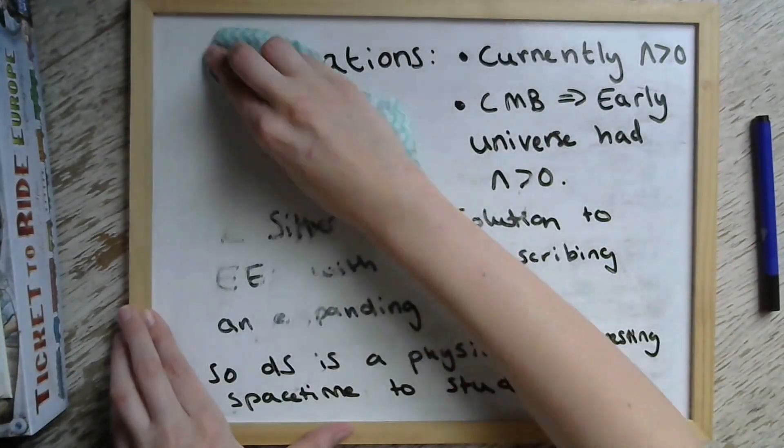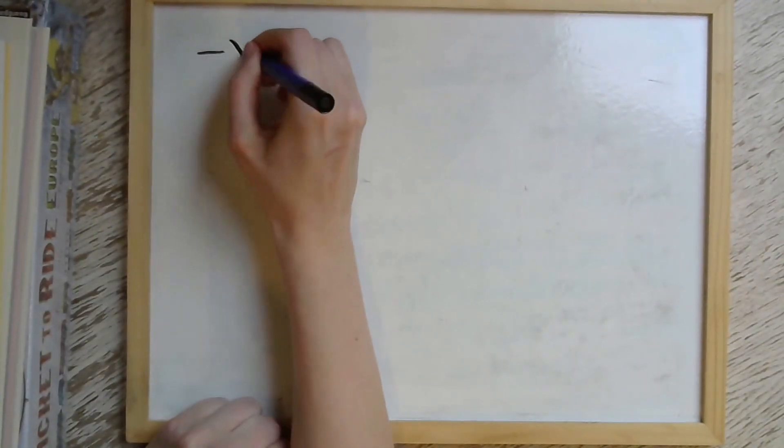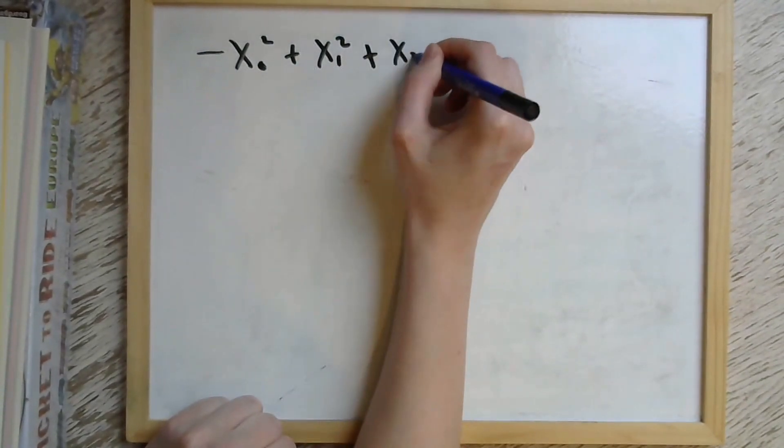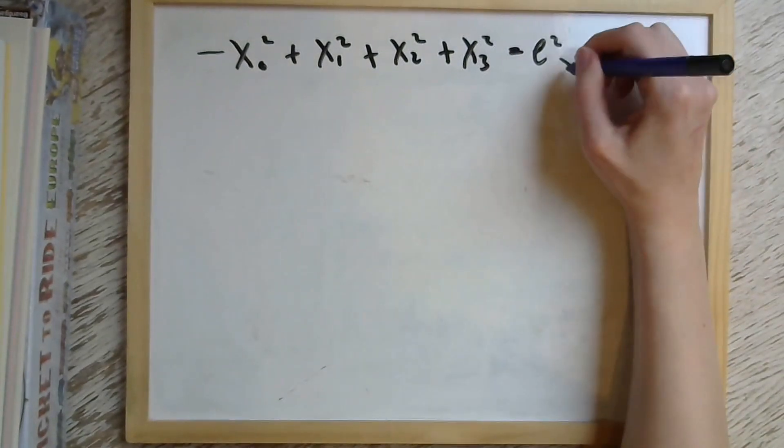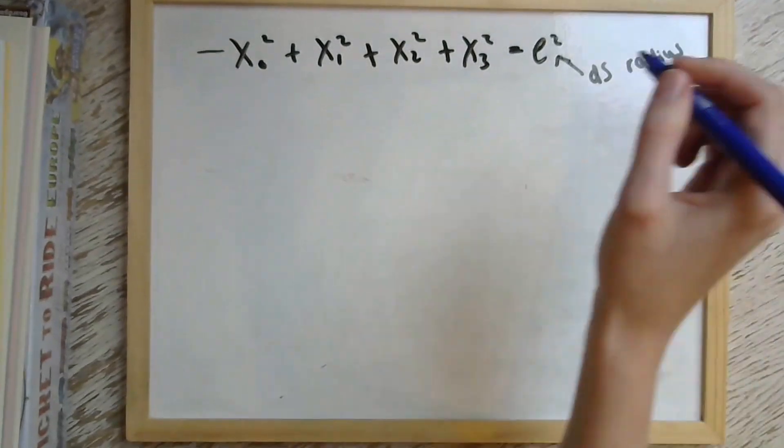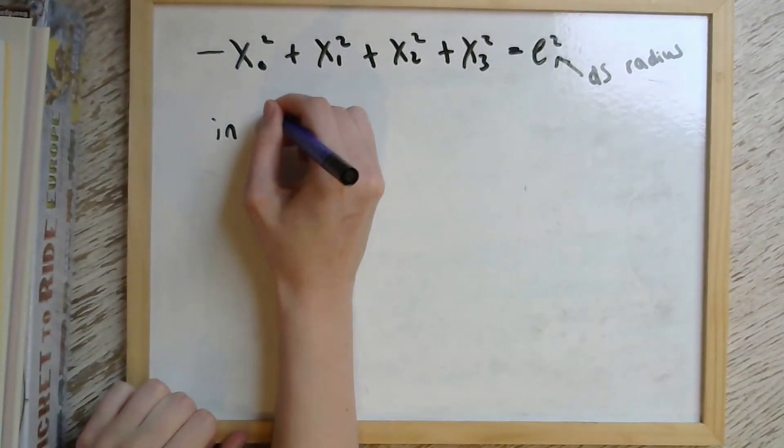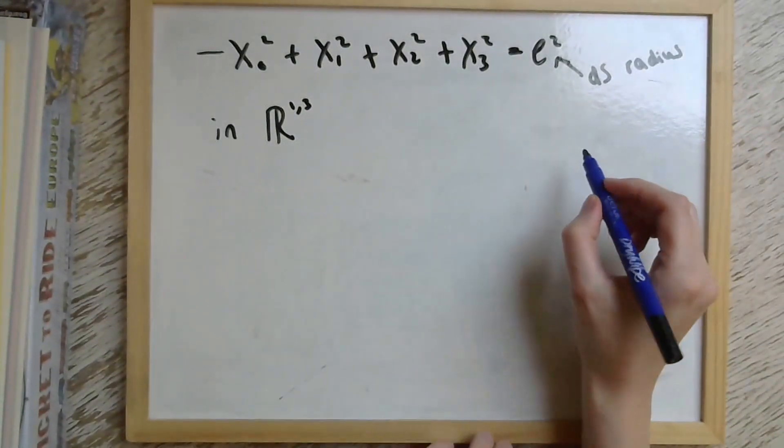So I'll start with a description of the geometry of de Sitter in three dimensions. The reason for restricting to three dimensions, I'll explain a little bit later. But in a similar way to ADS, we have an embedding space picture of de Sitter, which is described by this equation where this L² is the de Sitter radius. And this is embedded in flat space of one higher dimension. So in R^{1,3} and this hyperboloid looks something like this.